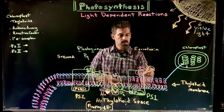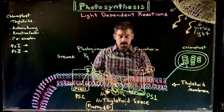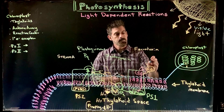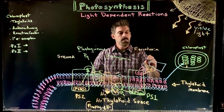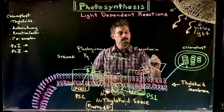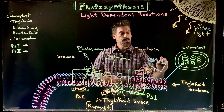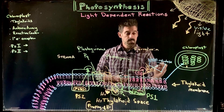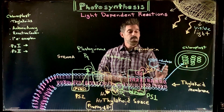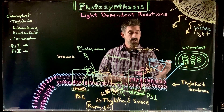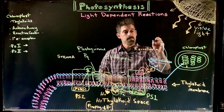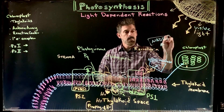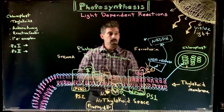The electrons go to ferredoxin, and ferredoxin interacts with an enzyme called NADP reductase. What this enzyme does is take the electrons from ferredoxin and give them to NADP+ to make NADPH.